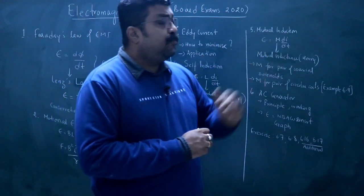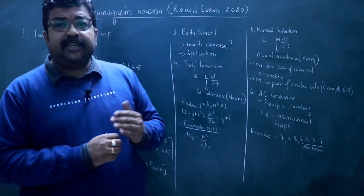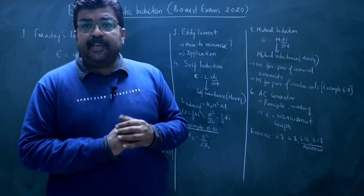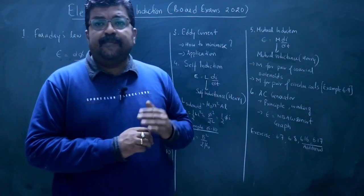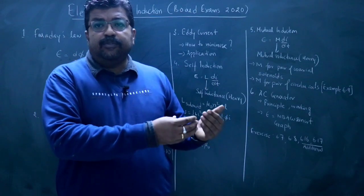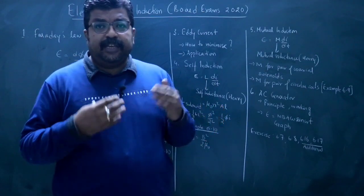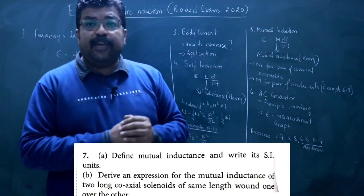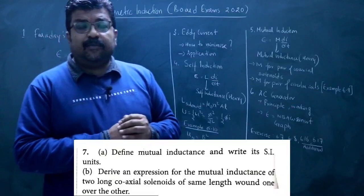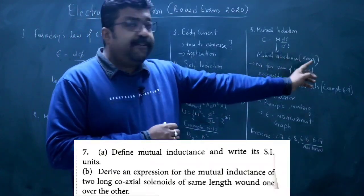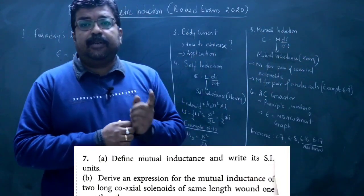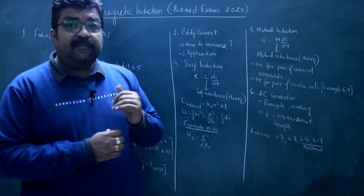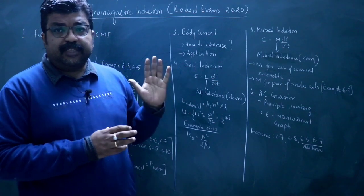Then coming to the topic of mutual induction. In mutual induction, the emf is induced in a coil due to change in magnetic flux in the neighboring coil. There are two coils. Then E is equal to M di by dt. Here M is mutual inductance, coefficient of mutual induction. And this is also the unit of Henry. So if there is mutual inductance of 1 Henry, then how can we define it? We can ask that. And here if there is self-inductance of 1 Henry, then how can we define it? We can also ask that.